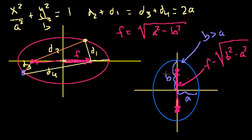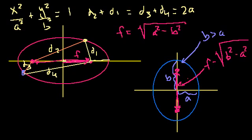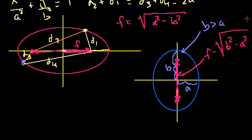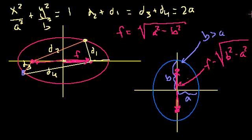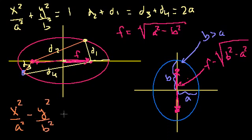Now I did all of that to compare it to what we're going to cover in this video, which is the focus points or the foci of a hyperbola. A hyperbola is very close to an ellipse — you could probably guess that because if this is an equation of an ellipse, this is the equation of a hyperbola: x squared over a squared minus y squared over b squared is equal to 1. Or we could switch these around where the minus is in front of the x instead of the y.